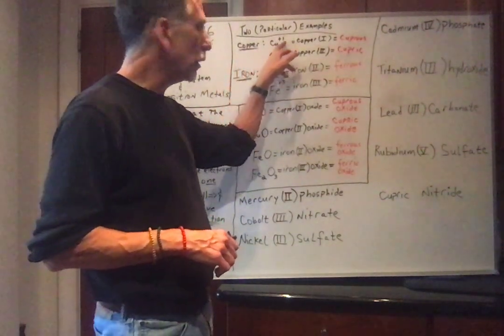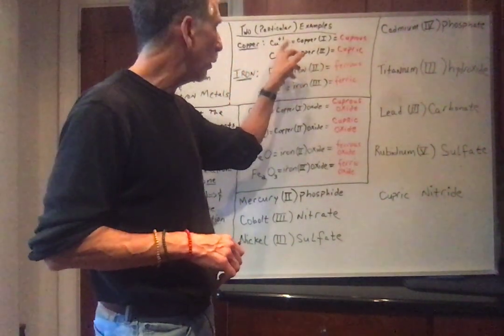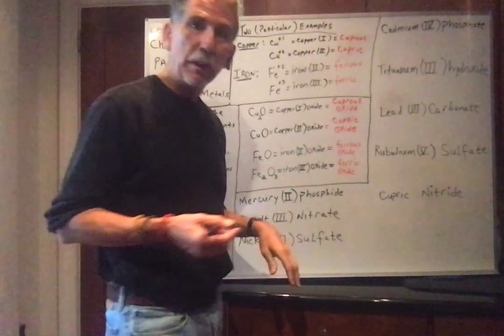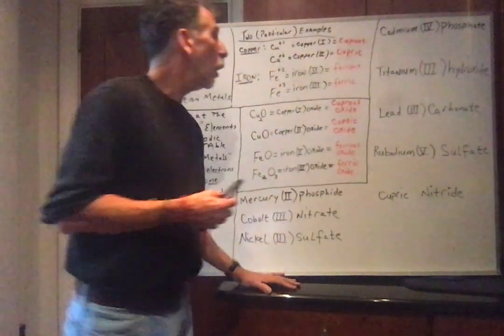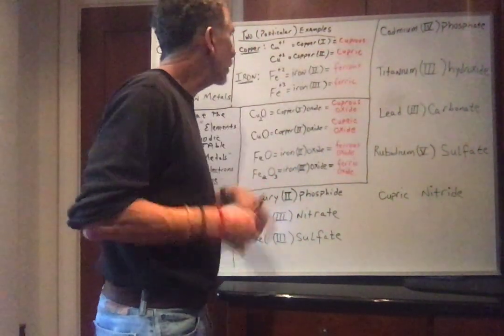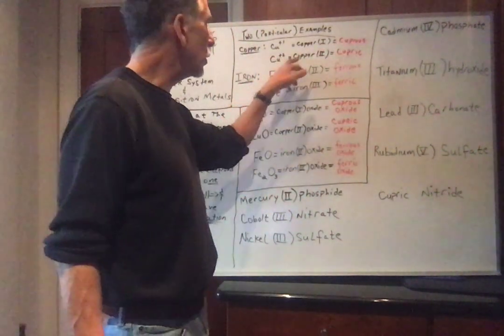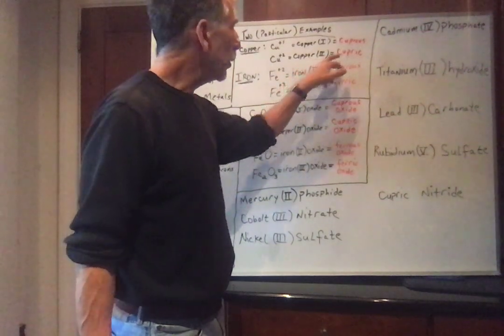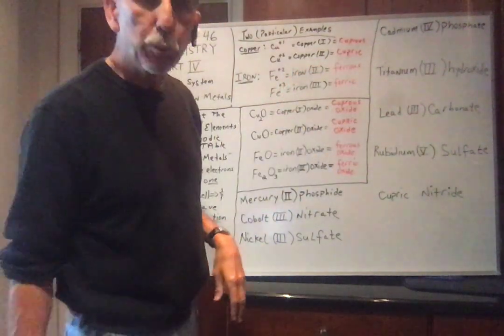Copper, if it's in the oxidation state plus 1, if it wants to give 1 electron, we call that copper 1. That's not too bad, right? Copper plus 2 is called copper 2, and it's given the name cupric.